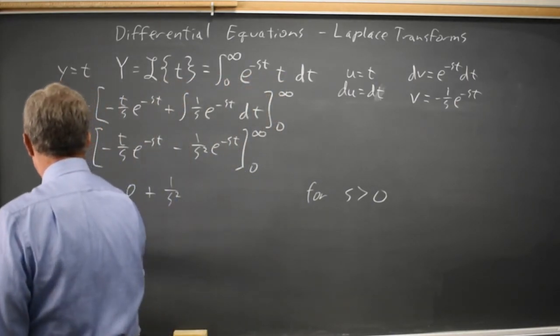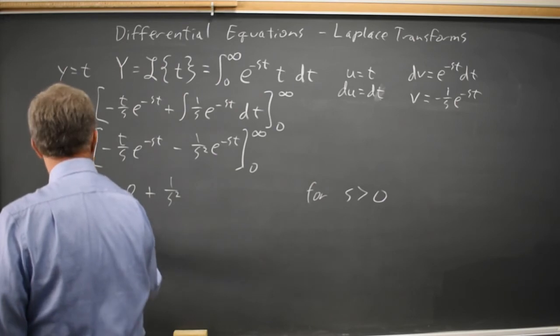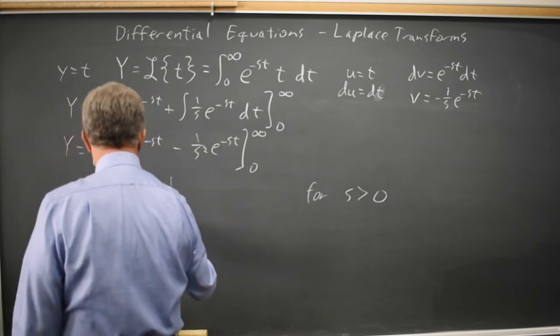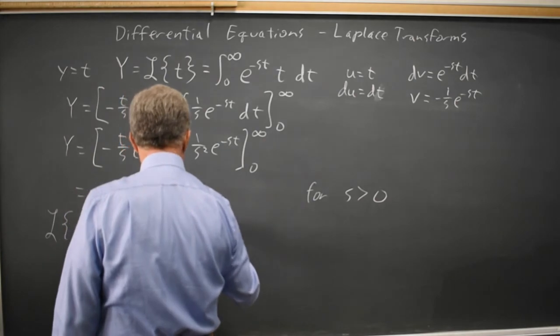So the transform of t is 1 over s squared for s greater than zero.